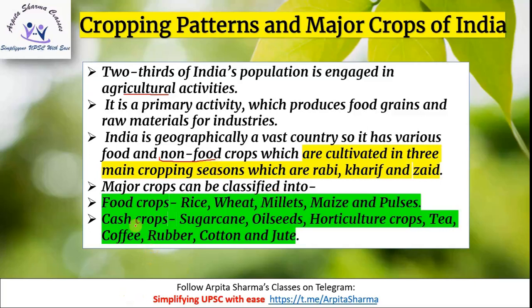Major crops in India can be classified as food crops and cash crops. Food crops include wheat, millets, maize and pulses. We will cover all the food crops and cash crops, including details on temperature and rainfall requirements. Cash crops covered include tea, coffee, rubber, cotton, and jute.